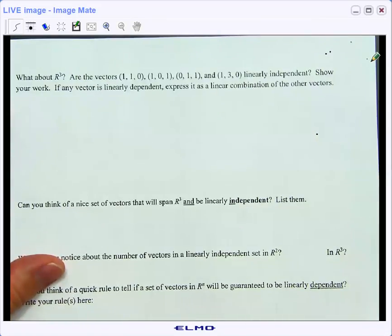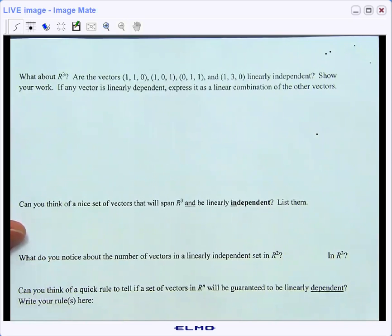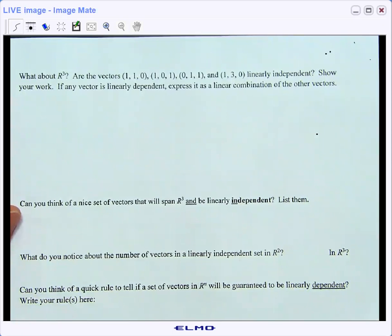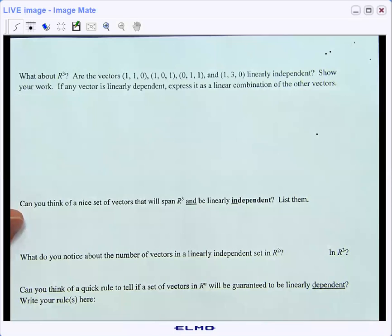Now, let's take it up to three dimensional space. So what if we have the vectors (1,1,0), (1,0,1), (0,1,1), and (1,3,0). Are they linearly independent? Pause the video and check to see if you can show whether they're linearly independent or not. And if they are linearly dependent, express any vector that's linearly dependent as a linear combination of the other guys.